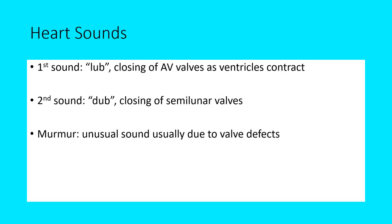In terms of heart sounds, there can be up to five different sounds, but the two main ones are described as lub-dub. The first sound — the lub — is the closing of the AV valves when the ventricles are contracting. The second sound — the dub — is the closing of the semilunar valves. That's why it's important to know the exact location of the heart, so you know where to listen with the stethoscope. If there's a heart murmur — an unusual sound usually due to valve defects not closing completely — you can hear a whooshing sound from slight backflow.